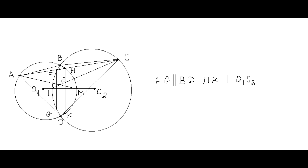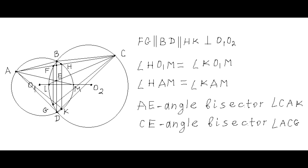Let two points F and H be the other intersections of diagonal AC with the two circles. Draw chords FG and HK of their respective circles, parallel to diagonal BD. The central angles HO1M and KO1M are equal, so the corresponding inscribed angles HAM and KAM are equal, meaning line AE is the angle bisector of angle CAK. Analogously, line CE is the angle bisector of angle ACG.